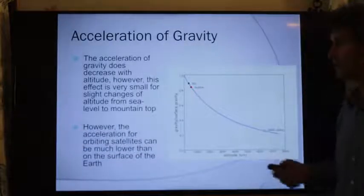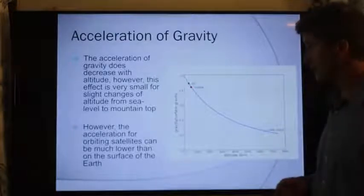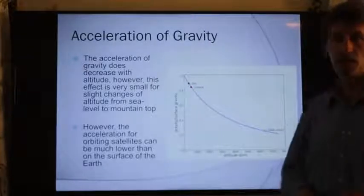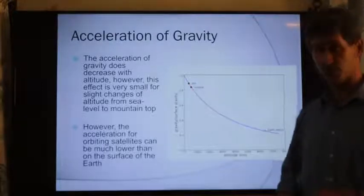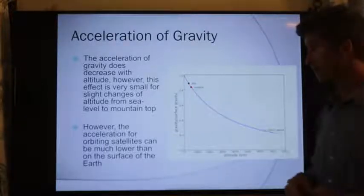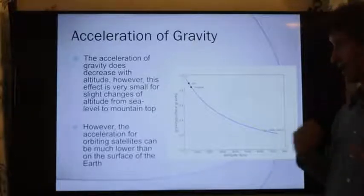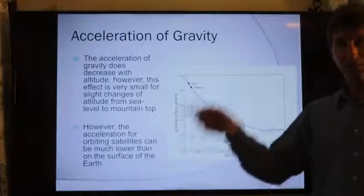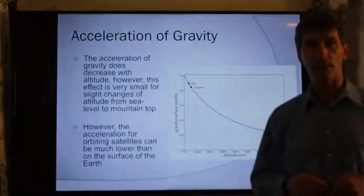The acceleration of gravity does decrease as we go to higher altitudes, but it's really not appreciable in terms of the change. At the surface, it's 9.8 or 1G. Even out by the International Space Station, which orbits above the atmosphere, the acceleration of gravity is still close to 90%. You say, well, how come the people are weightless? That's a totally different thing. They're actually in free fall going around the Earth, and we'll talk more about that later on.